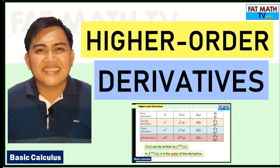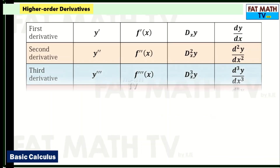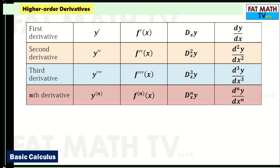In this video we will cover higher order derivatives, which is a basic calculus topic. Higher order derivatives are simply the derivatives of the first derivative. We have the second derivative, the third derivative, and the nth derivative. If we get the derivative of the function that's the first derivative; the derivative of the first derivative gives the second; the derivative of the second gives the third; and so on — getting the derivative of the (n-1)th derivative gives the nth derivative.